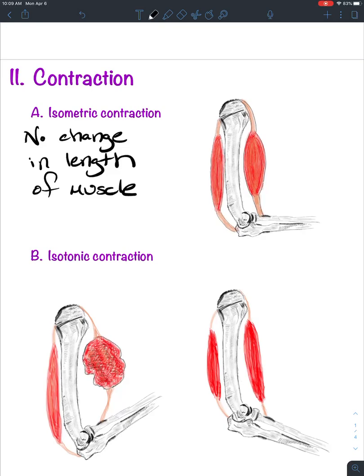Isometric contraction means there is no change in the length of the muscle when it's contracting. 'Iso' means the same, and 'metric' refers to length. A better example is pushing against a wall or some force greater than your muscles can overcome. You can be contracting your biceps brachii all day long, but they're not going to change length because you're not going to displace that wall. Isometric contraction is contraction of a muscle with no change in its length.